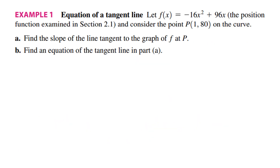Let's see this example. Let f of x be a function equal to minus 16x squared plus 96x. Consider the point (1, 80) on the curve. In part a, we want to find the slope of the tangent to the graph of f at that point.